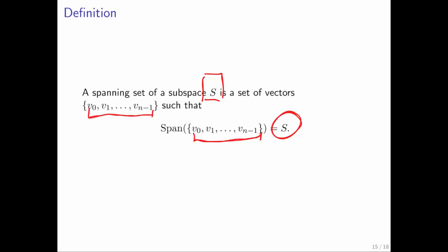Then the entire subspace, an infinite number of vectors typically, is characterized by a finite number of vectors. That's a good thing. So, any set that has the property that the span of that set is a given subspace is known as the spanning set of that subspace.